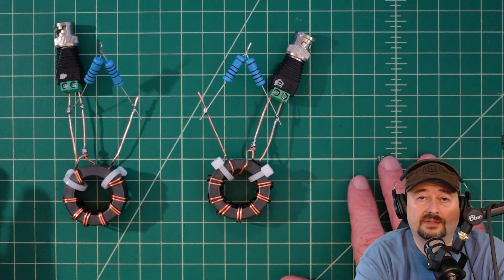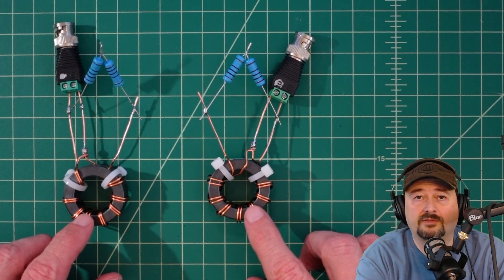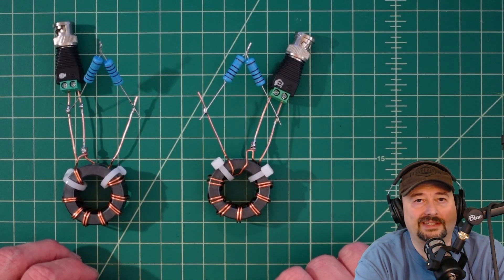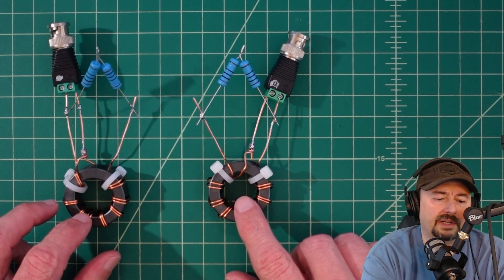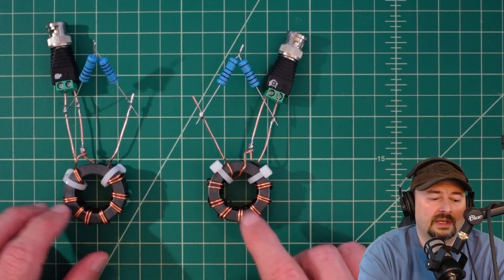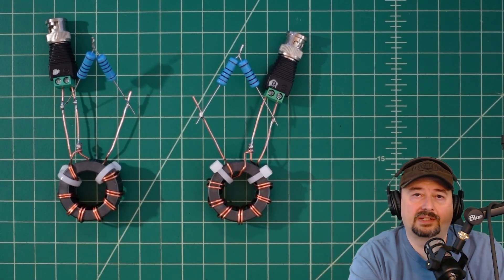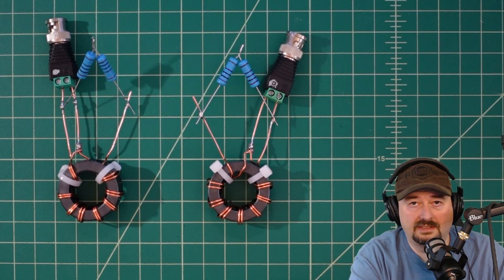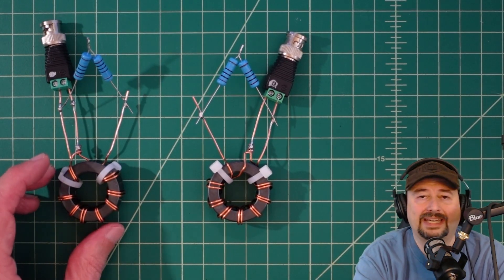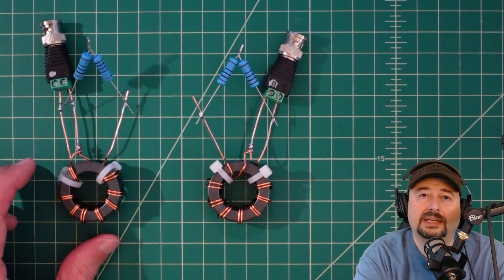By determining the SWR match we're going to see how well these transform impedance. I want to talk about why we would use these. With the balun we would use these on symmetrical antennas to match our coaxial cable which is unbalanced to balanced symmetrical antennas like dipoles, doublets, and Yagis.